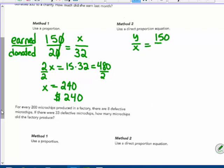So y divided by x would be 150 divided by twenty. That would give me that my constant is seven and a half. So y equals seven and a half times x.